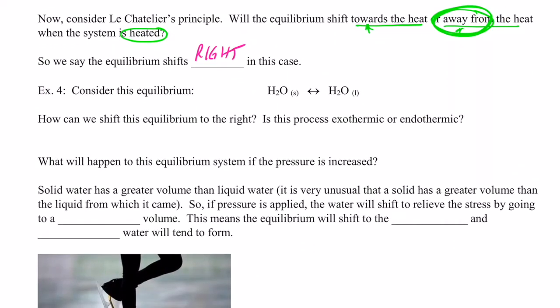Now consider this equilibrium: solid water turning to liquid water. How can we shift this equilibrium to the right? Is it exothermic or endothermic? Solid to liquid means melting — that's endothermic again. So we put ΔH on the left-hand side. If we heat this, the equilibrium shifts to the right, making more liquid. That makes sense: if we have a system at equilibrium with solid water and we heat it, we cause it to melt. But let's try a different stress — what if we add pressure?